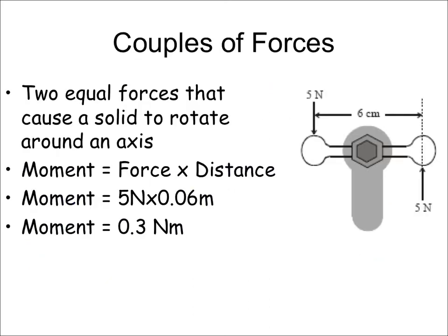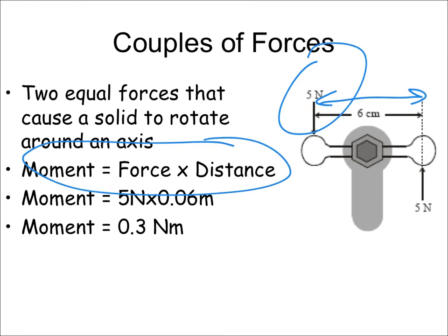The last thing to discuss is a couple. A tap or bicycle handlebars are examples of a couple — you push in both directions at once. To work out the moment of a couple, you multiply one of the forces (they must be equal) by the distance between them. A couple is two equal forces acting in opposite directions, such as turning on a tap.